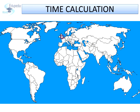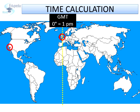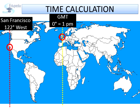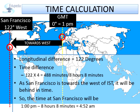Let's take another example. If the time at GMT is 1 PM, what would be the time at San Francisco, which is 122 degrees west? Since San Francisco is towards the west, it will be behind the time of GMT. The longitudinal difference between both places is 122 degrees, which makes 488 minutes, that is 8 hours and 8 minutes of time difference. As San Francisco is towards the west of GMT, it will be behind in time. So the time at San Francisco will be 1 PM minus 8 hours 8 minutes, that is 4:52 AM.